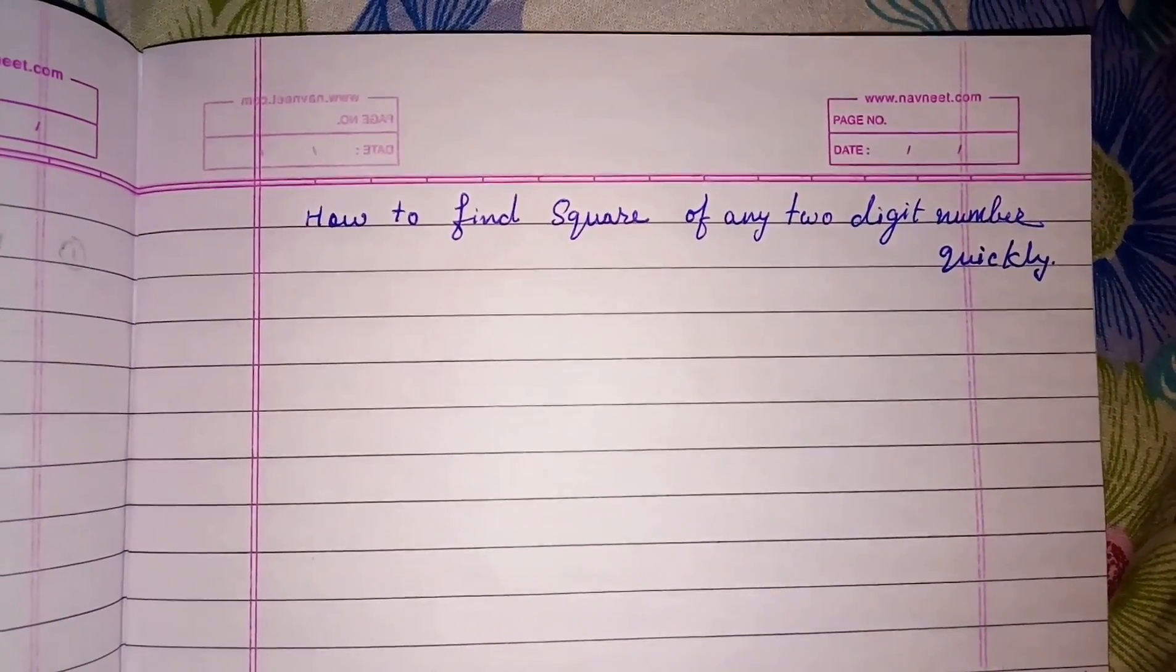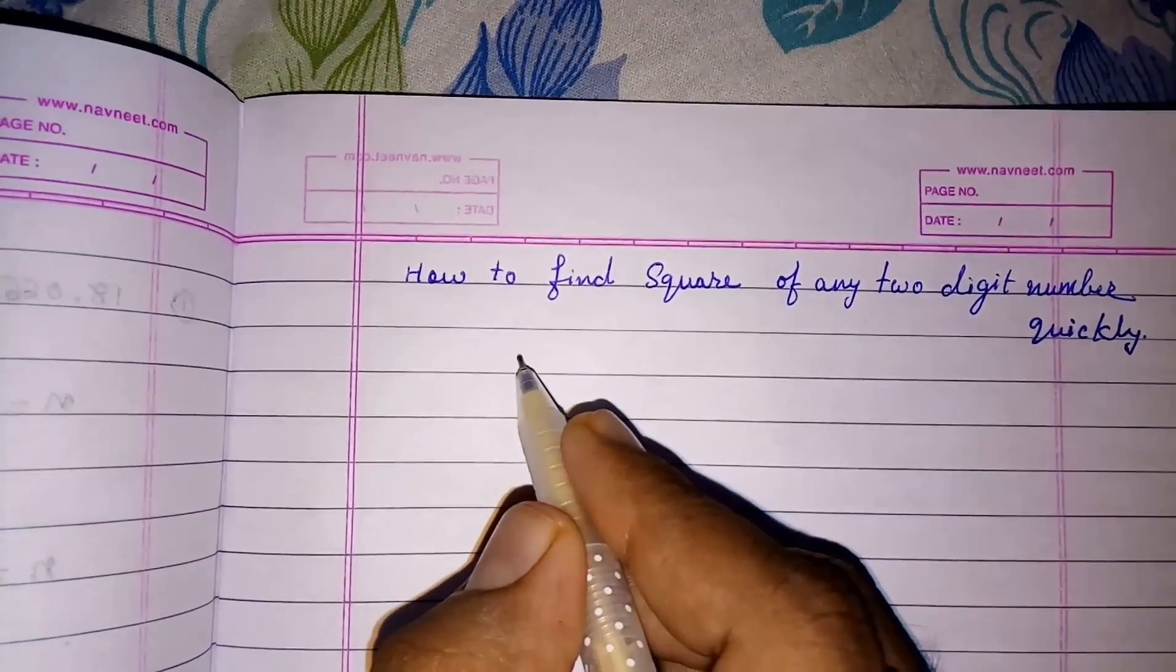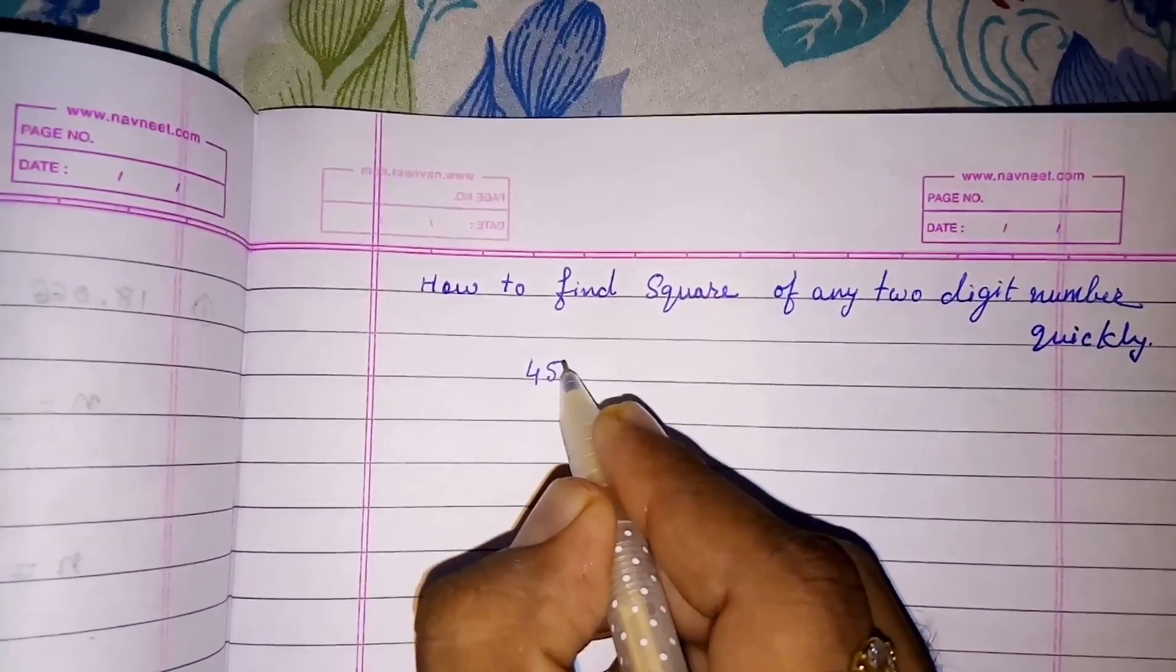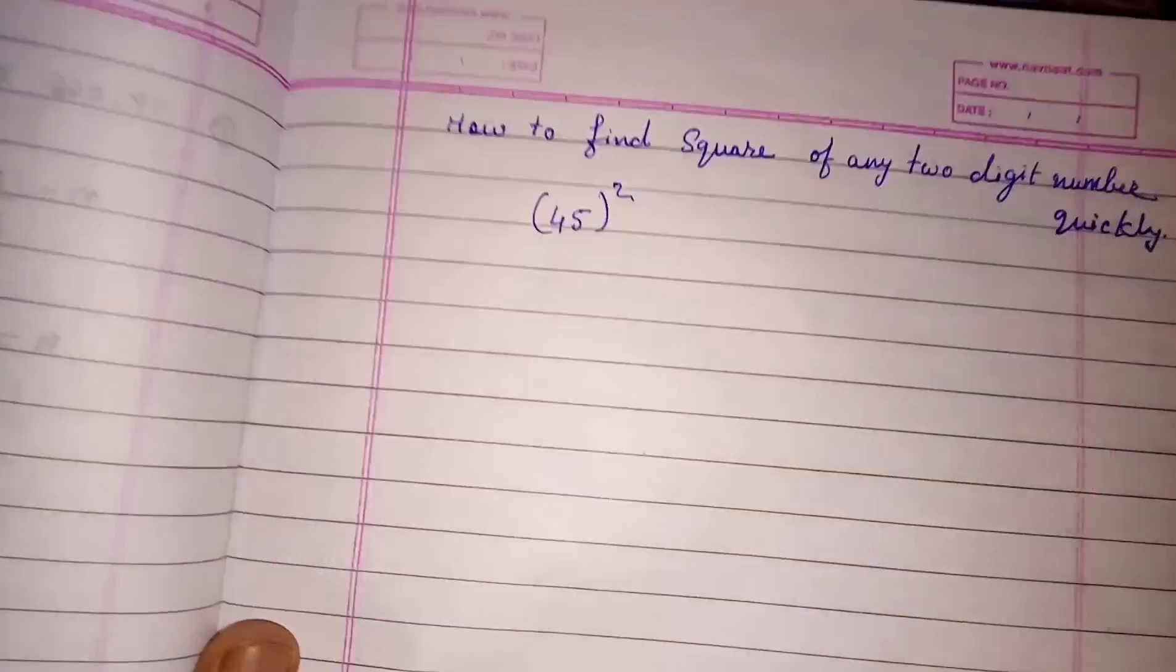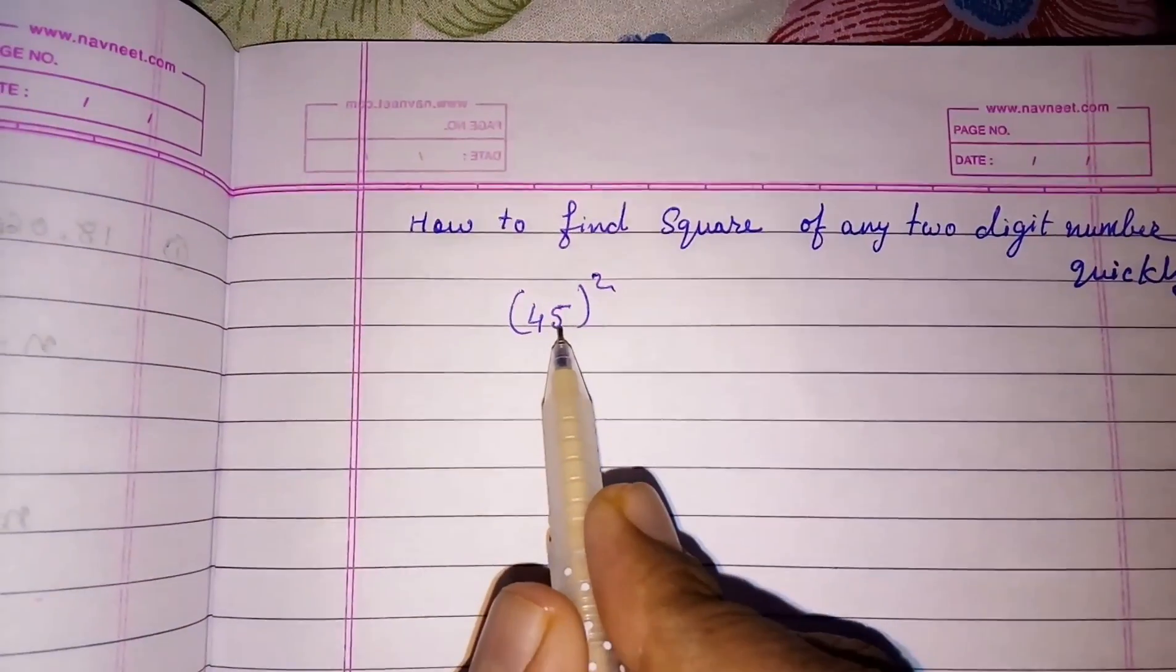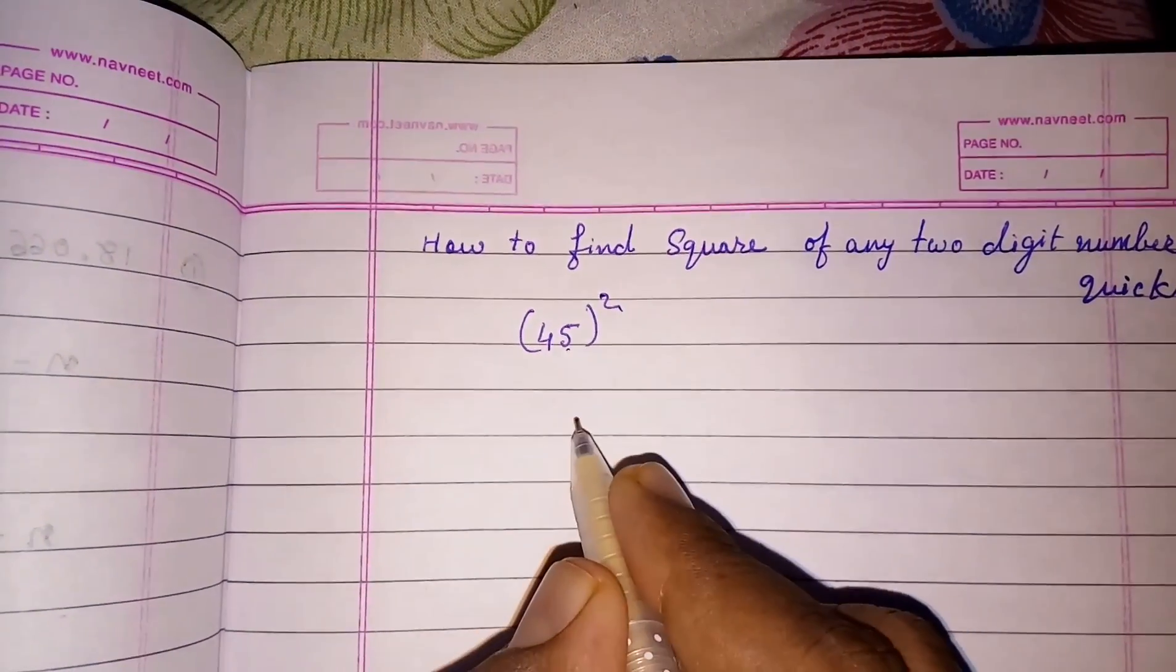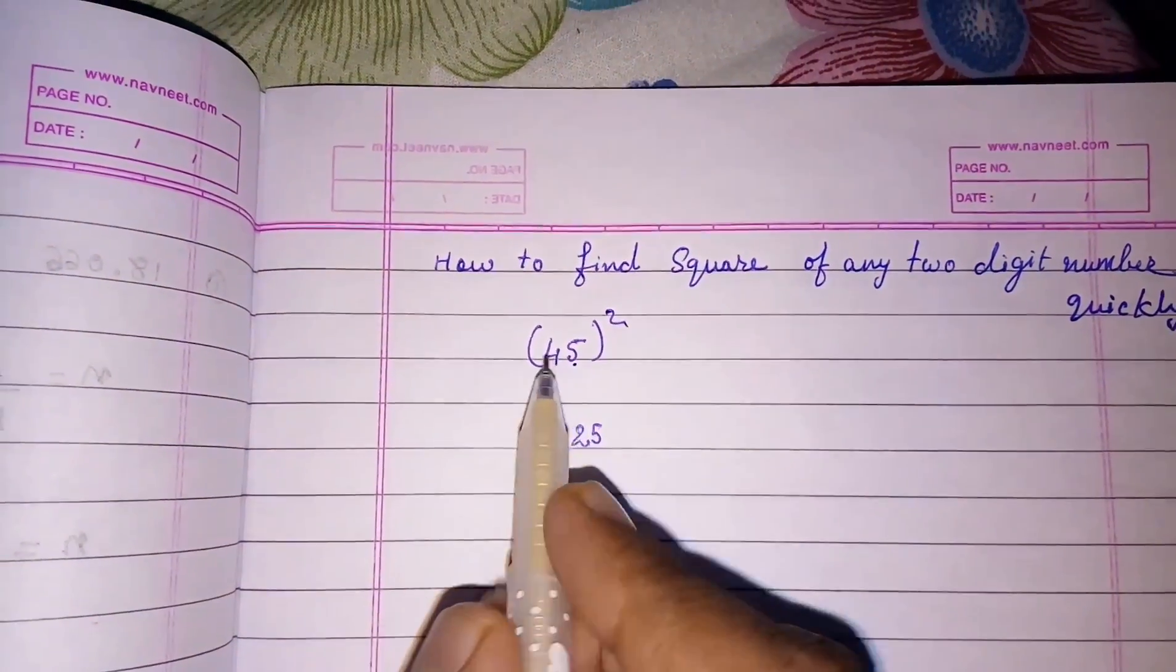Look here. Suppose we take any number, I am taking here 45, square of 45. So what we have to do for finding the square of 45? First we know what is the square of 5, it's 25.